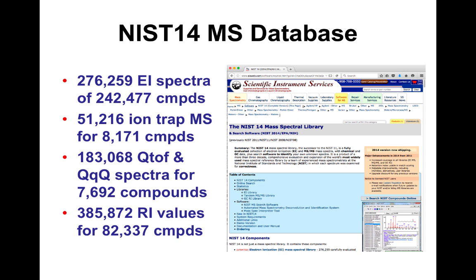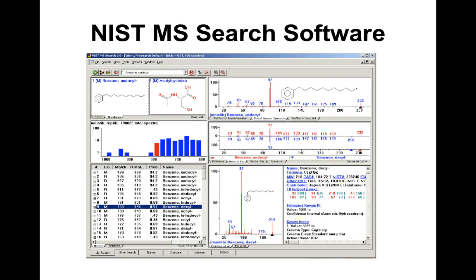The NIST software looks quite dated and hasn't been updated much, but it does allow you to do searches, with compound identifiers and mirror spectra for comparing your observed spectrum against the reference spectrum — the red versus blue in the window.